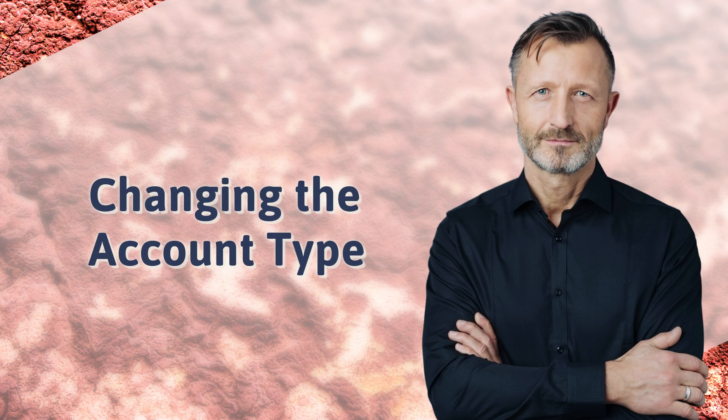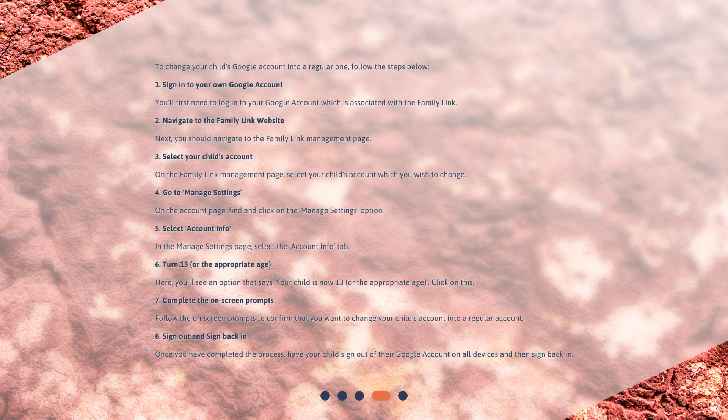To change your child's Google account into a regular one, follow the steps below. Step 1: Sign in to your own Google account. You'll first need to log in to your Google account which is associated with the Family Link. Step 2: Navigate to the Family Link website. You should navigate to the Family Link Management page. Step 3: Select your child's account on the Family Link Management page — select the account you wish to change.